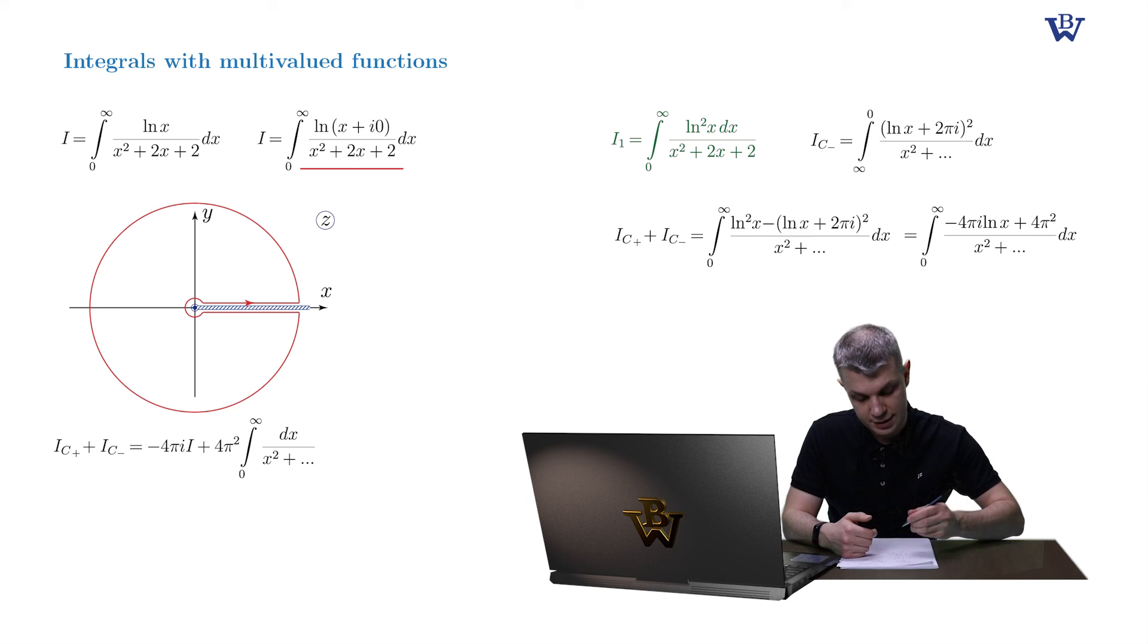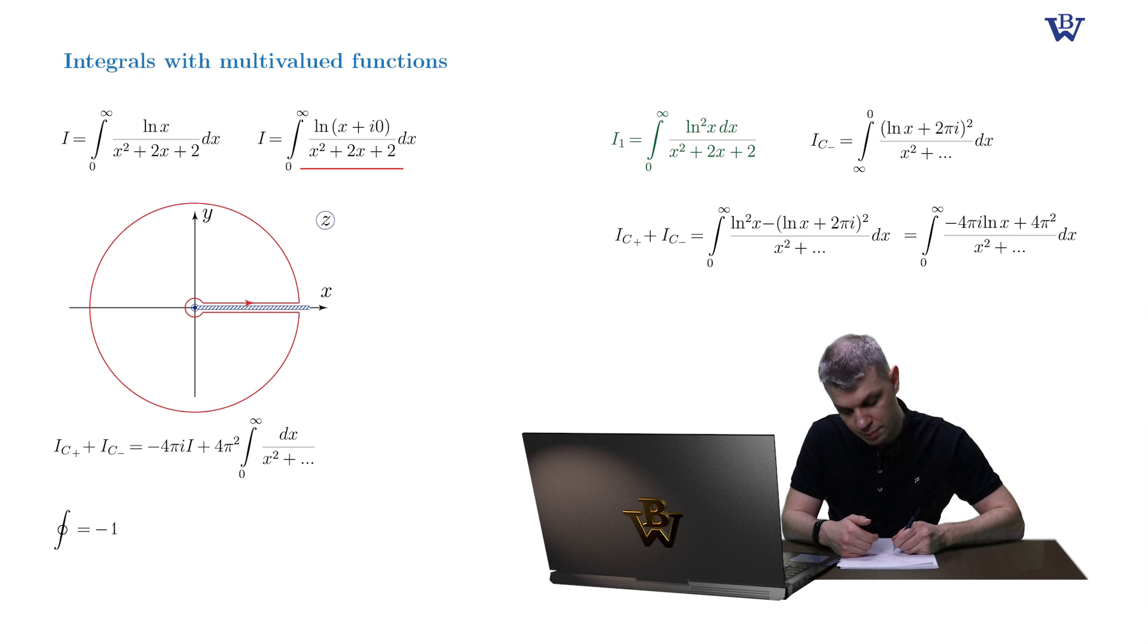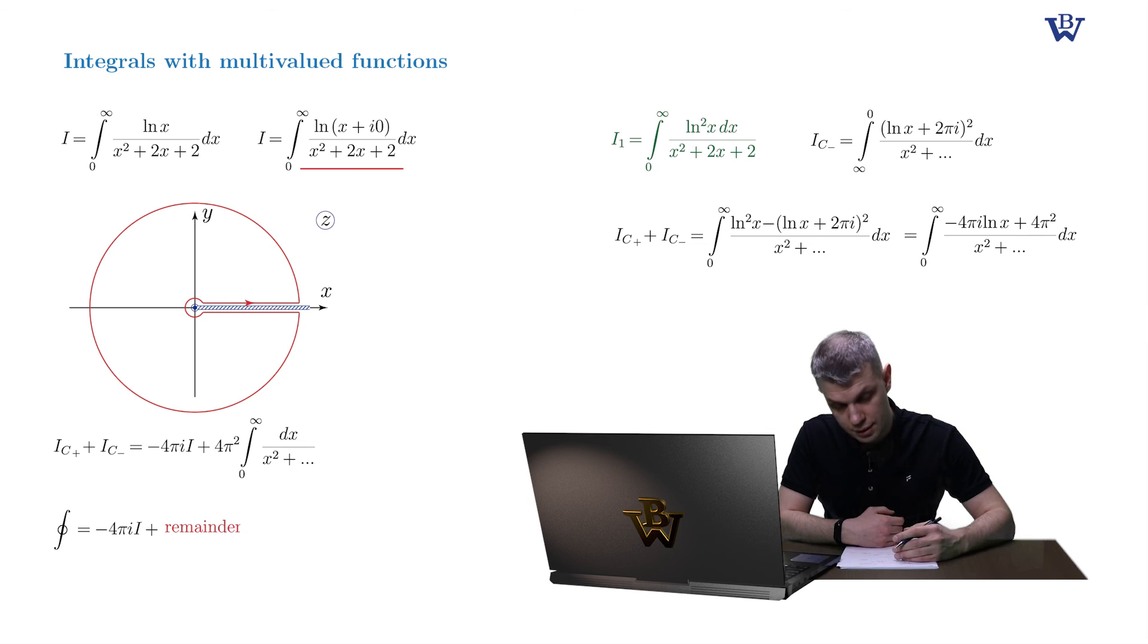Our goal is achieved. We managed to express some closed contour integral via our original integral, which is nothing but minus 4 pi i times i plus the remainder term. Now we simply need to use the residue theorem to compute our closed contour integral. So let's do it on our next slide.